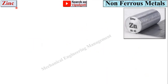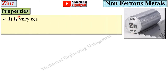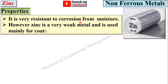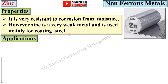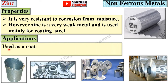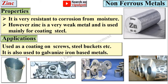Next, zinc. Here you can see a specimen of zinc. Properties: it is very resistant to corrosion from moisture; however, zinc is a very weak metal and is used mainly for coating steel. Applications: used as a coating on screws and steel buckets. It is also used to galvanize iron-based metals, or simply steel.